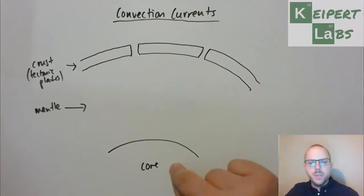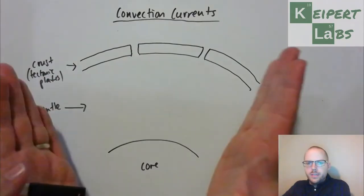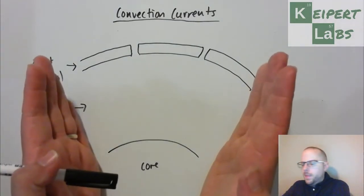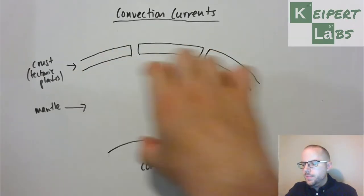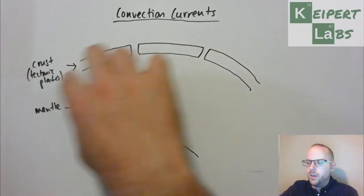So what we have here represents our core of the Earth. If we took our slice of the Earth, extending down, we have the core, we've got this layer of the mantle under here, and then we have our crust, our tectonic plates.